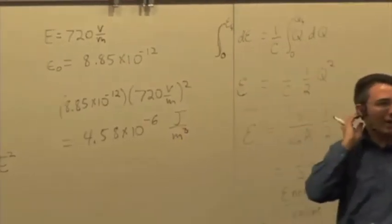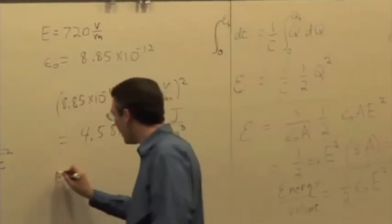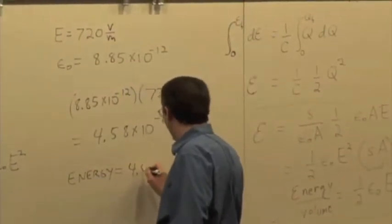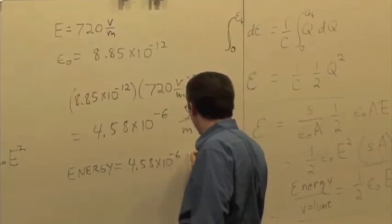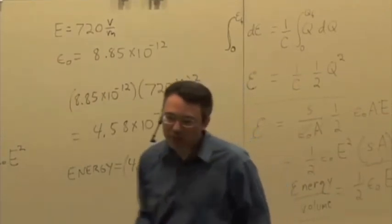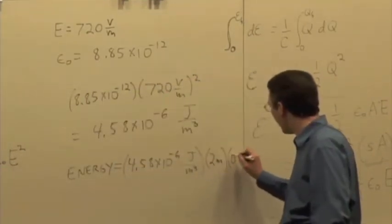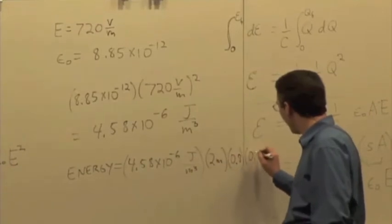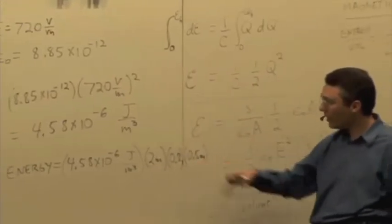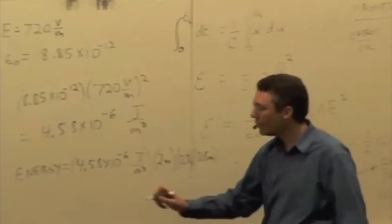So to get the total energy, what do I have to do? Multiply it by the volume. And the volume, so the energy is going to be 4.58 times 10 to the minus 6 joules per meter cubed. And what's the dimension? It's 2 by 0.8 by 0.5. 2 meters by 0.8 by 0.5. So 0.5 times 2 is going to give you 1. So the whole thing is going to be 0.8 meters cubed, right?